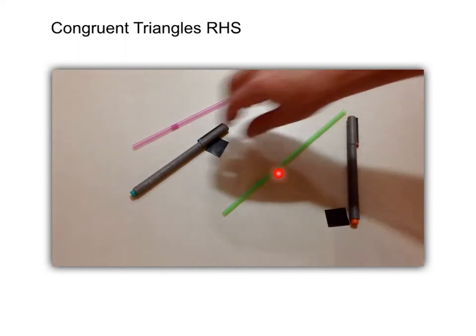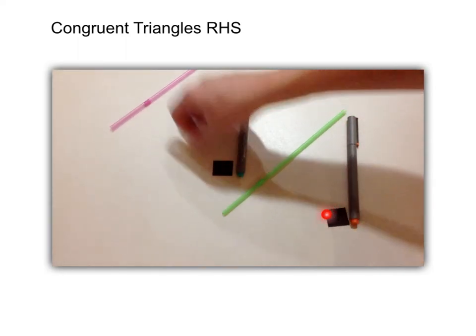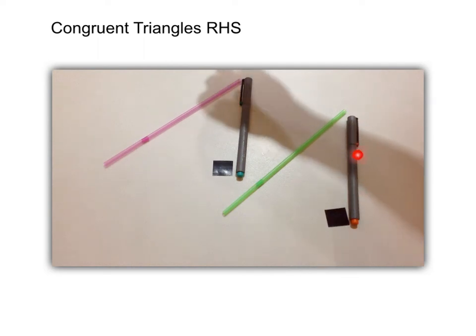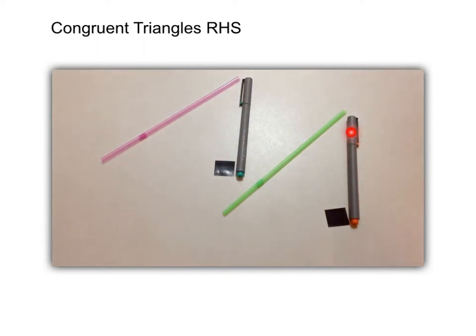And this will be the hypotenuse. This will be the right angle, and this will be just any side of the right angle triangle. This is the hypotenuse, right angle, and one of the two sides of a right angle triangle.